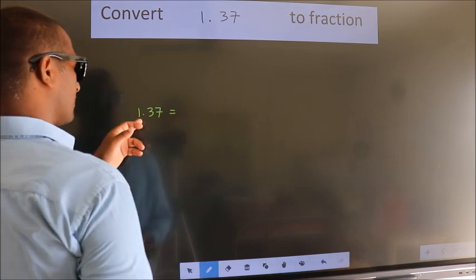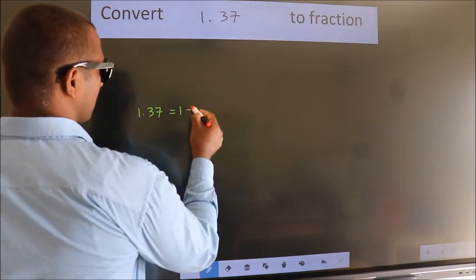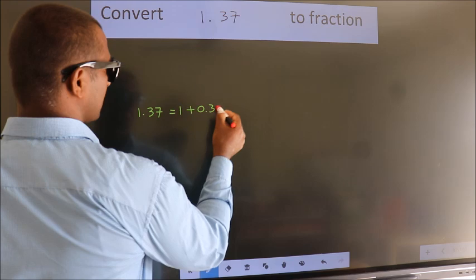First, we should break this into 1 plus 0.37.